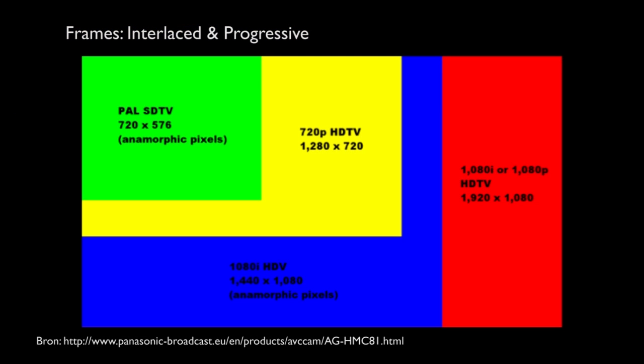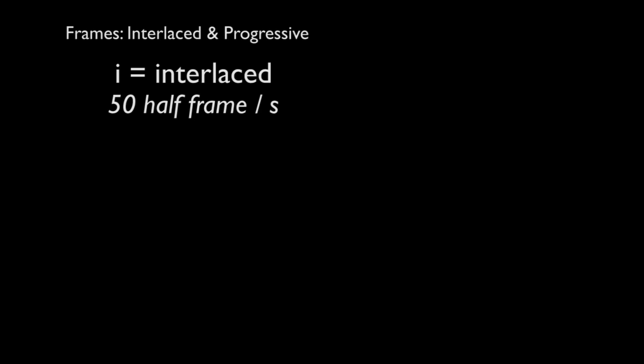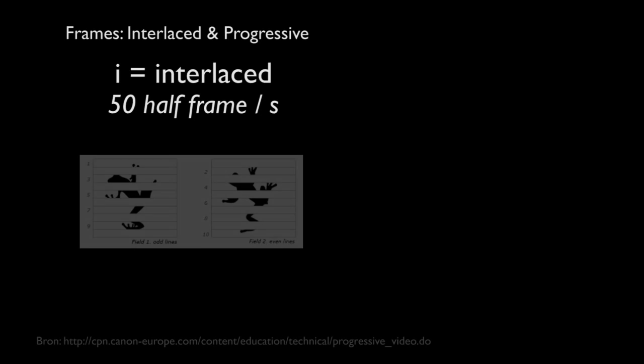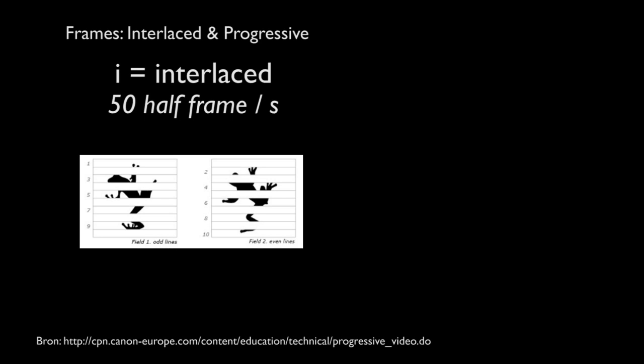If we look at resolutions, you can see here a graphic view of different resolutions. The biggest frame — including the red area — is full HD, and the smallest one is the old standard definition resolution. A frame can either be interlaced or progressive.